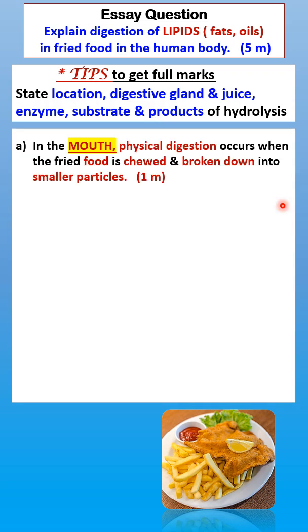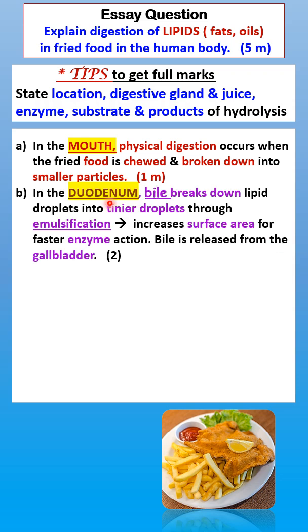Start with the mouth. In the mouth, physical digestion occurs when the food is chewed and mechanically broken down into smaller pieces — one mark. This is physical digestion in the mouth.